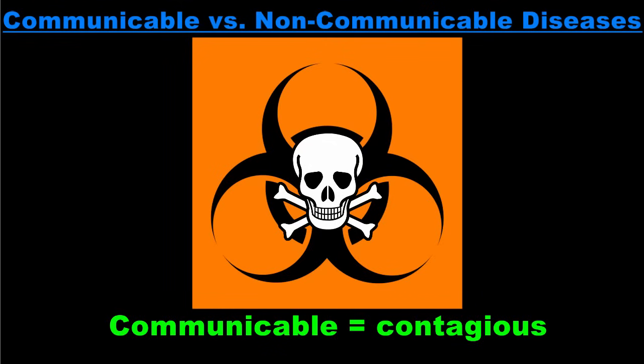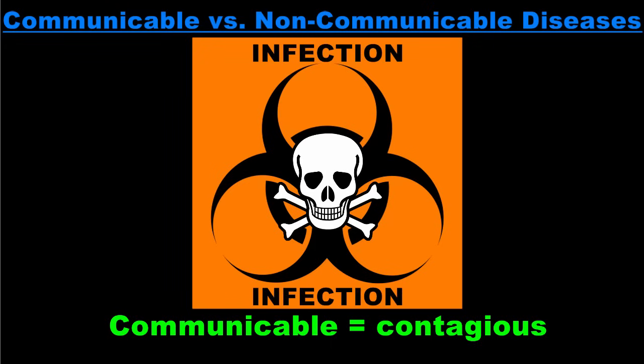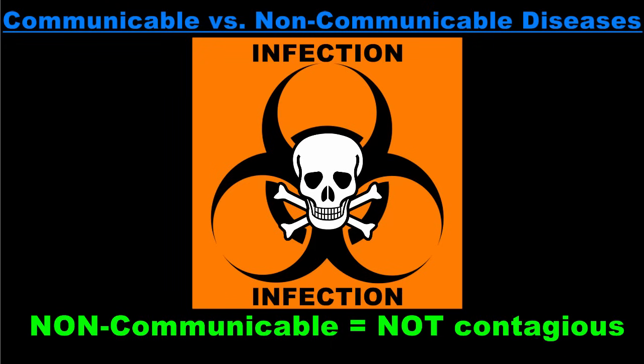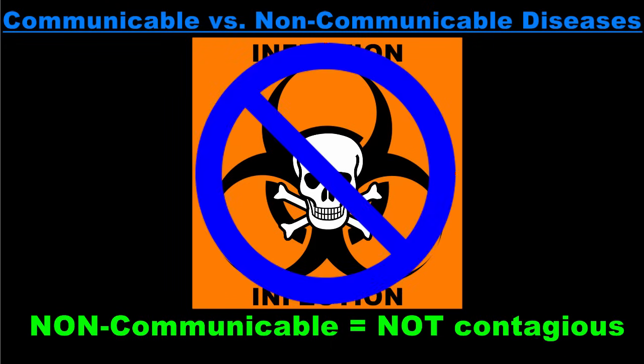The word communicable basically means contagious, so a communicable disease is one that can be spread to another person through infection. Non-communicable diseases, on the other hand, cannot be spread from person to person because they are not contagious. Each category has its own causes that will be discussed throughout this lesson.